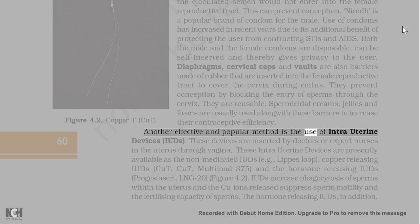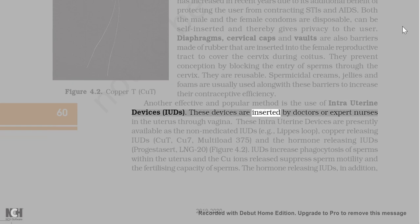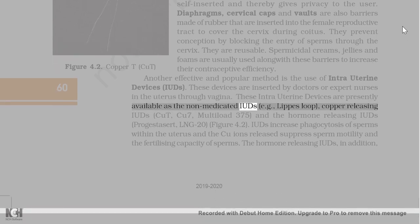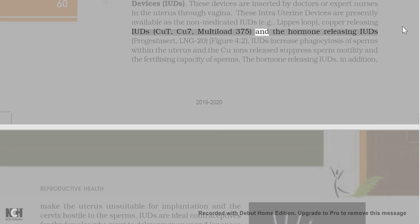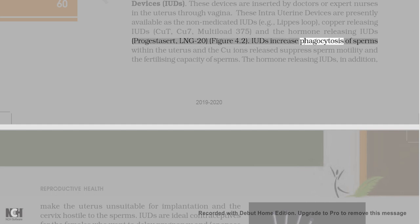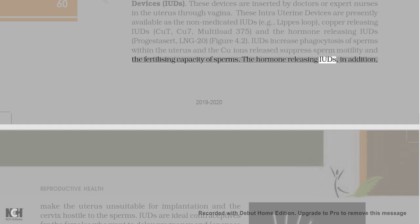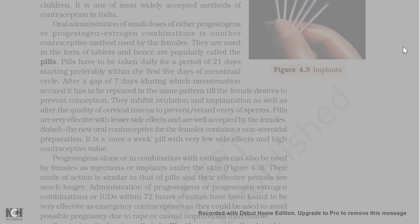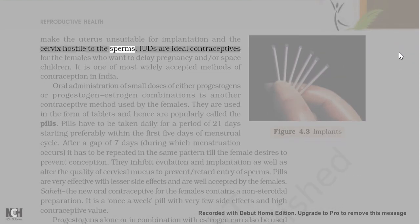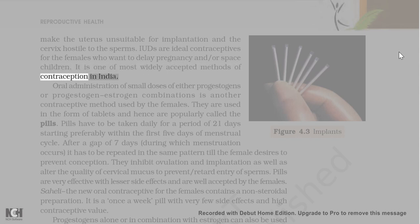Intrauterine devices (IUDs) are inserted by doctors or expert nurses into the uterus through the vagina. These are available as non-medicated IUDs (e.g., Lippes loop), copper-releasing IUDs (CuT, Cu7, Multiload 375), and hormone-releasing IUDs (Progestasert, LNG-20). IUDs increase phagocytosis of sperms within the uterus, and Cu ions suppress sperm motility and fertilizing capacity. Hormone-releasing IUDs also make the uterus unsuitable for implantation and the cervix hostile to sperms. IUDs are ideal contraceptives for females who want to delay or space children and are one of the most widely accepted methods in India.